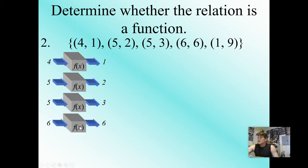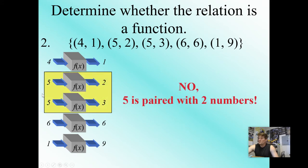6 gives me an output of 6. 1 gives me an output of 9. Because of that double 5, it's paired with 2 different numbers. That's not a function. We need an x value to only have 1 output, not 2 different types.